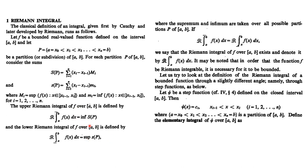Why do we take infimum and supremum? In the case of the upper Riemann integral, we consider the infimum because we are using the maximum value — we are finding the area of upper rectangles. Among all upper sums using the largest function values, the minimum one is the most appropriate approximation of the area under the curve.